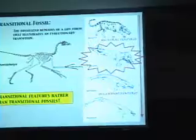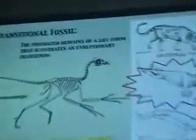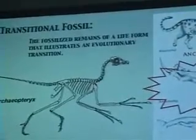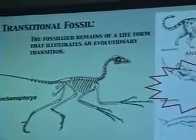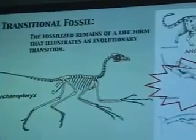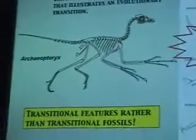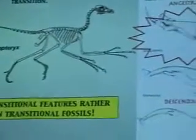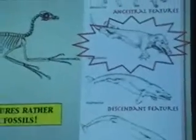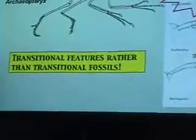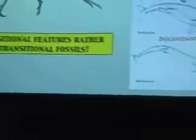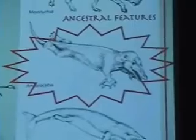It's these transitional fossils that give us basically our roadmap to our modern biota. So let's start with the definition: a transitional fossil is the fossilized remains of a life form that illustrates an evolutionary transition. Transitional fossils will show a mosaic of features — they will have features reminiscent of their ancestry and also features on the way to their descendants. They're a mix of ancestral and descendant features. Paleontologists tend to look for transitional features rather than labeling something a transitional fossil in and of itself.